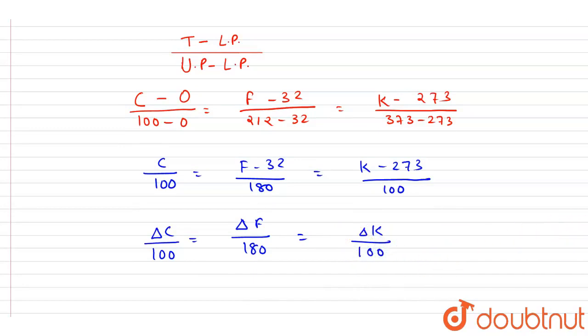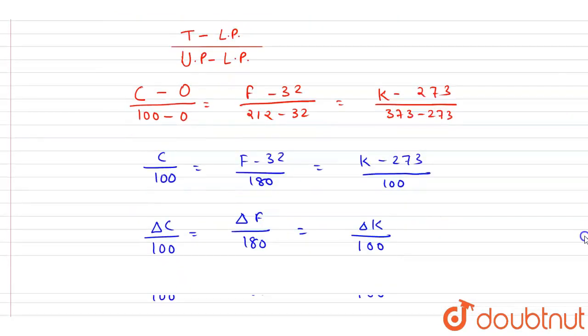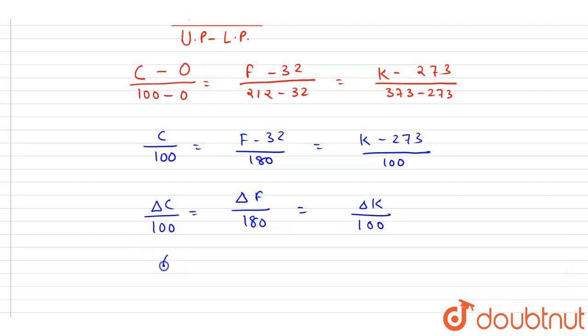So if you see the change in temperature in Celsius scale, it is del C, it is 90 minus 30, so it is 60 degree Celsius. Put the value here.